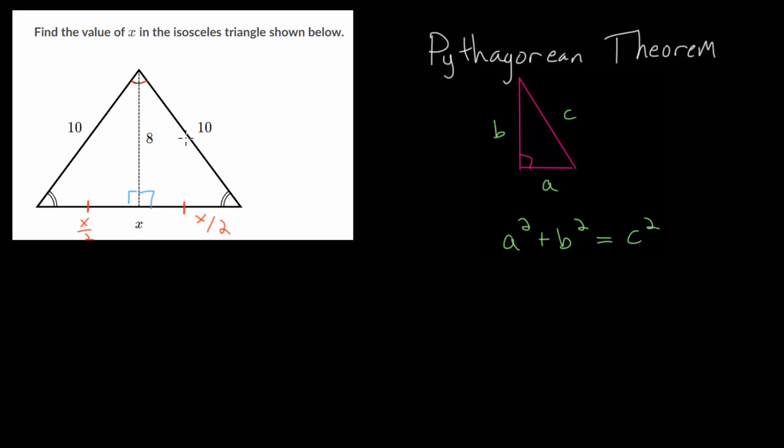We can look at either of these right triangles and use the Pythagorean theorem. Let's just look at this triangle right here. We have that this side length squared plus this side length squared is equal to 10 squared.